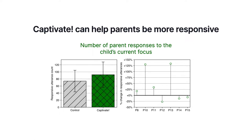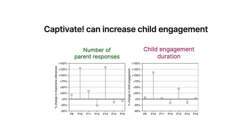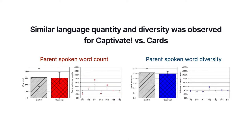We observed that when parents used cards, they were distracted when looking for relevant phrases to use. On the other hand, Captivate enabled parents to stay focused on their child because they did not have to navigate any interface. We also found that child engagement was often correlated with higher parent responses — the child was more interested in playing when the parent was responsive. We did not observe large differences in parent language quantity and diversity, as parents actively used both the cards and the Captivate app in both cases. However, the proportion of words responsive to the child's focus was significantly higher with Captivate.